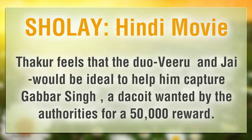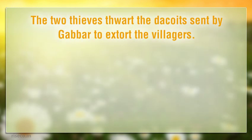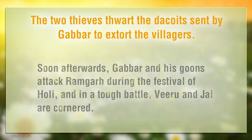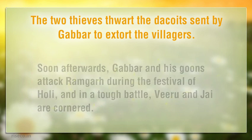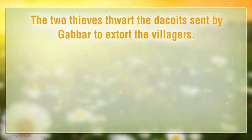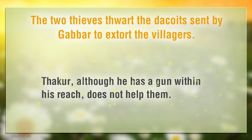Thacker feels that the duo, Veeru and Jai, would be ideal to help him capture Gabbar Singh, a dacoit wanted by the authorities for a 50,000 reward. The two thieves thwart the dacoits sent by Gabbar to extort the villagers. Soon afterwards, Gabbar and his goons attack Ramgah during the festival of Holi, and in a tough battle Veeru and Jai are cornered. Thacker, although he has a gun within reach, does not help them.